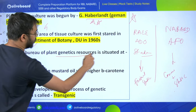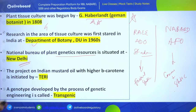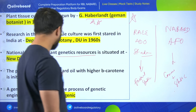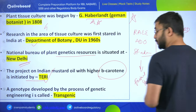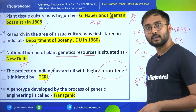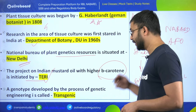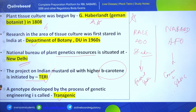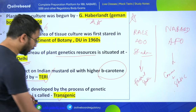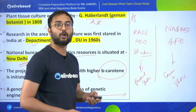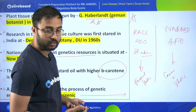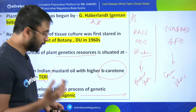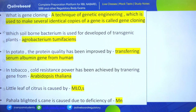The National Bureau of Plant Genetic Resources is situated at New Delhi. The project on Indian mustard oil with higher beta carotene is initiated by TERI. Beta carotene is a precursor of Vitamin A. The genotype developed by the process of genetic engineering is called transgenic. Please give examples of transgenic crops in the comment section.